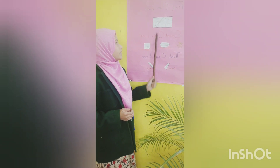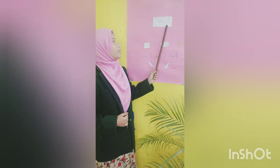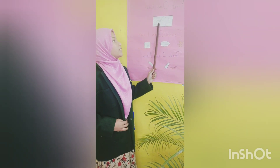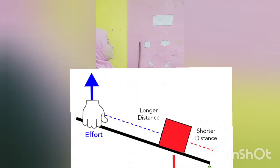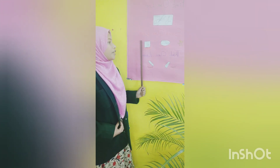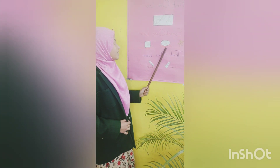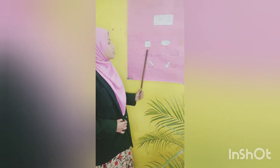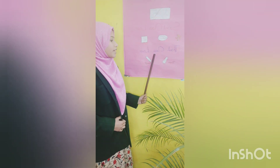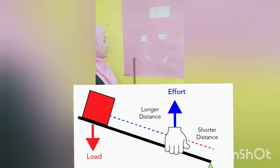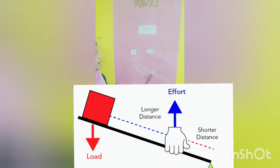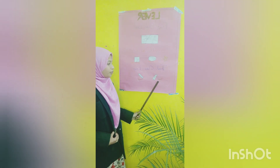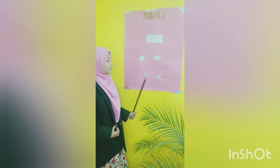For example, pliers and scissors. In a second class lever, the load is between the fulcrum and the effort — for example, a nutcracker and a wheelbarrow. In a third class lever, the effort is between the fulcrum and the load — for example, a broom and a spatula.